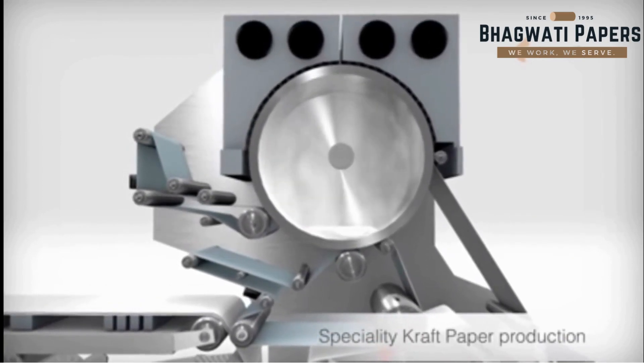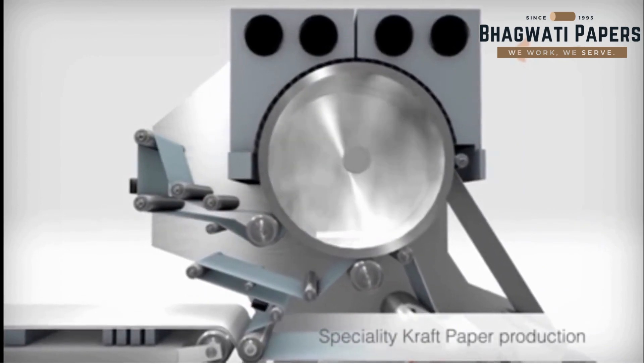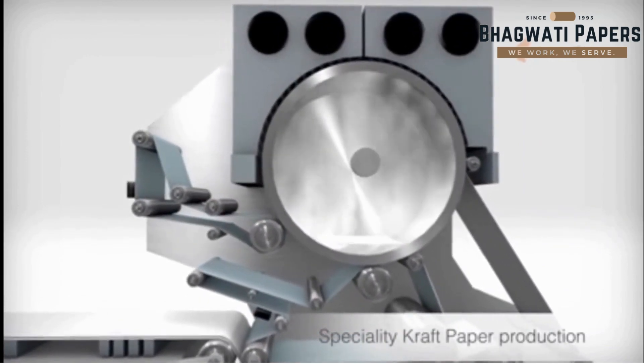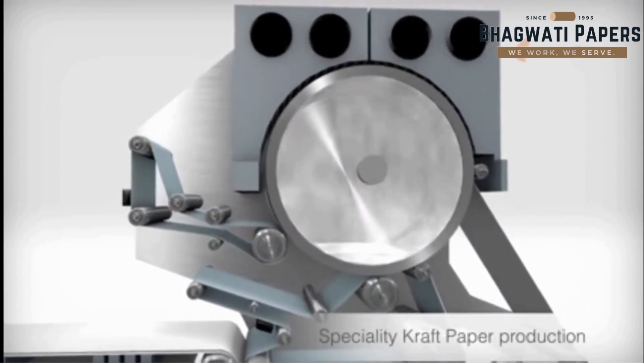The first smoothing press is followed by a second one, in which the paper can be marked by special felts, if ribbed qualities are required.